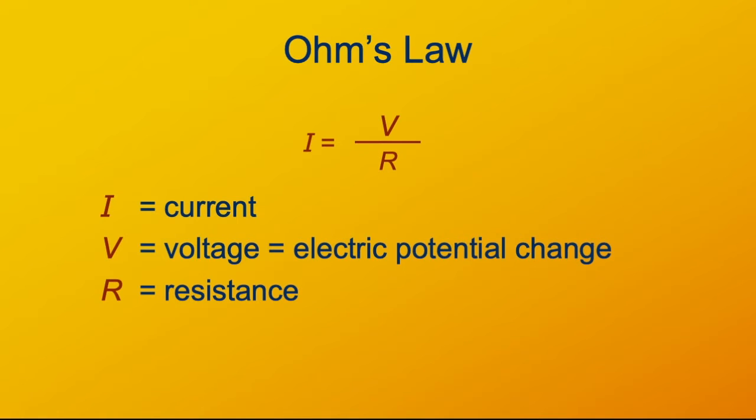The relationship is this way. The current flowing through a component is equal to the voltage across the component divided by the resistance of the component.